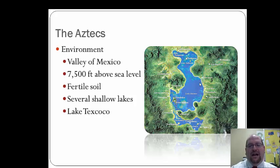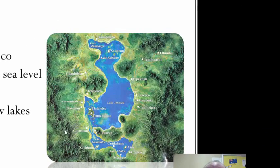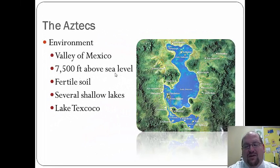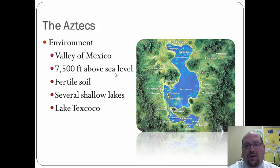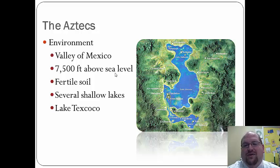A little about the environment. The Valley of Mexico lies between two sets of mountains, with Lake Texoco in the middle. Because it's in the valley, it sits about 7,500 feet above sea level — very high and cool, but lush with agriculture and trees. There were several shallow lakes that assisted with agriculture. The capital and surrounding cities were located on and around Lake Texoco, including the major city on the middle island.